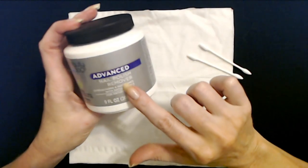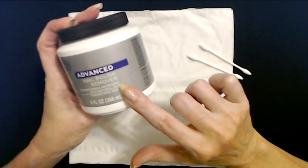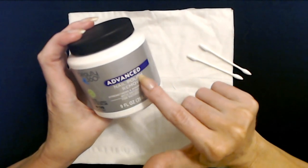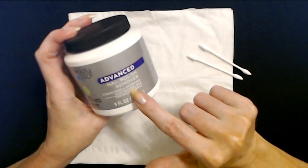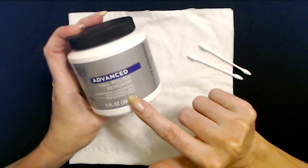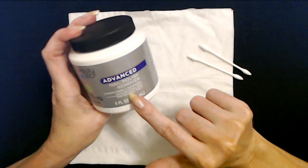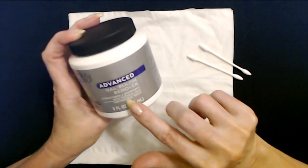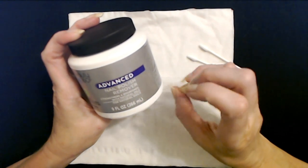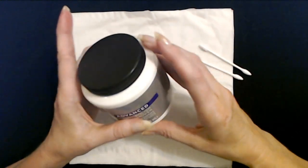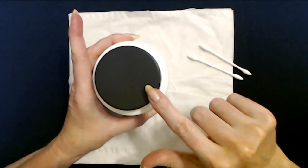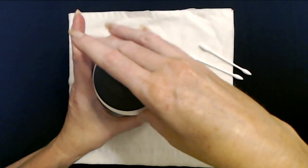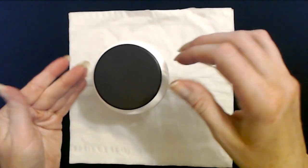This is Beauty 360 Advanced Nail Polish Remover. This is a CVS brand, and I love this one. I always get the Advanced Nail Polish Remover. This one seems to work the best. It strengthens and nourishes with natural oils, and it's for natural nails.